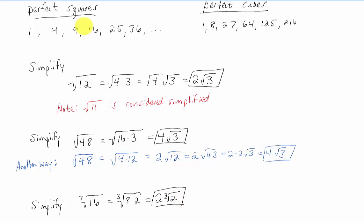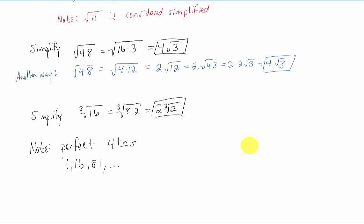A quick note here, we have perfect squares, we have perfect cubes, we have perfect fourths as well. The numbers get really big really fast, so I really only know one, 16, and 81. This is one to the fourth, two to the fourth, three to the fourth, and there are perfect fifths and so on as well.